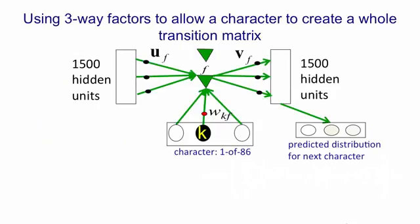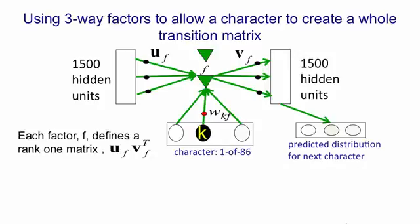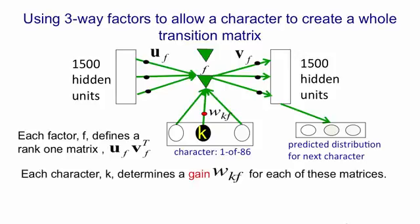So here's a picture of the whole system. We have a number of factors, in fact we'll have about 1500 factors, and the character input is different in that only one of those is active, so there'll only be one relevant weight at a time. And that weight from the current character K, which is called WKF, is the gain that's used on the rank one matrix got by taking the outer product of U and V. So the character determines a gain, WKF. You multiply the rank one matrix, U, V, by that gain. You add together those scaled matrices for all the different factors, and that's your transition matrix.